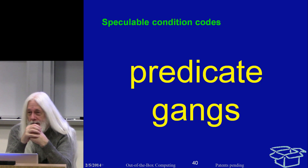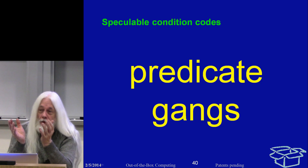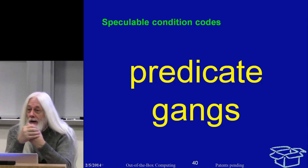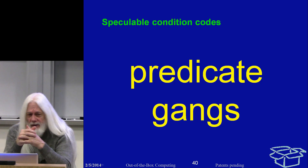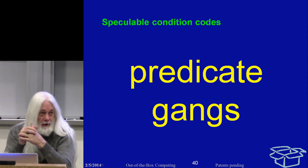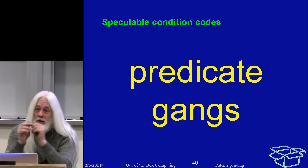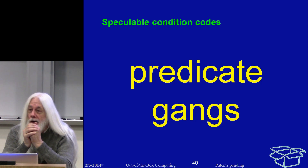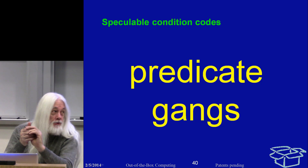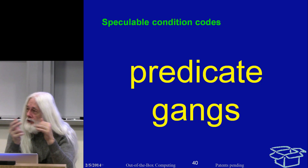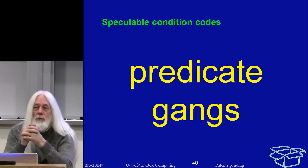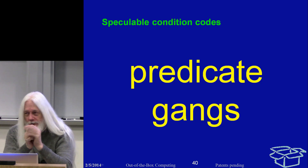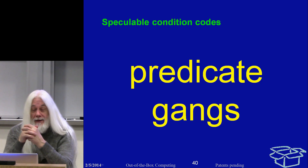The problem is that condition codes are global state. You can do a subtract and get the result and immediately branch on whether you got zero, for example — they were designed to support decremental looping. But the next operation that uses the ALU just clobbers your condition codes. When you're doing a whole bunch of operations in parallel, all of whom set the condition codes — who wins? Condition codes are never used in wide-issue machines, and in an out-of-order machine they have to be renamed because they will get clobbered.